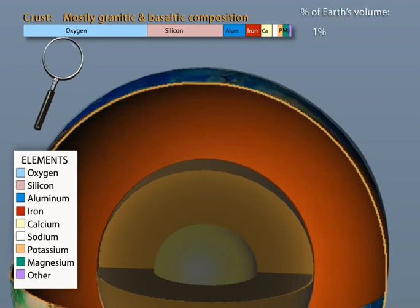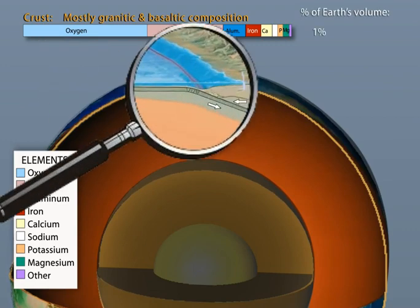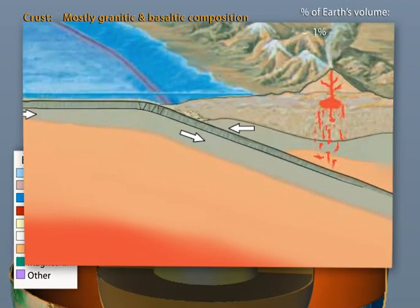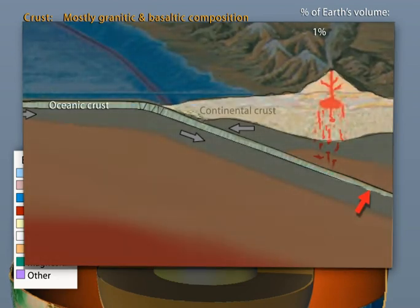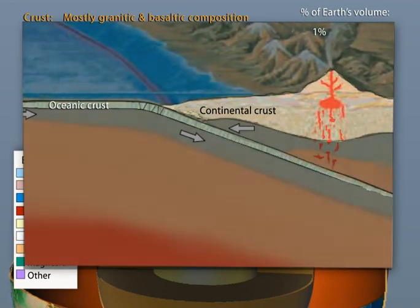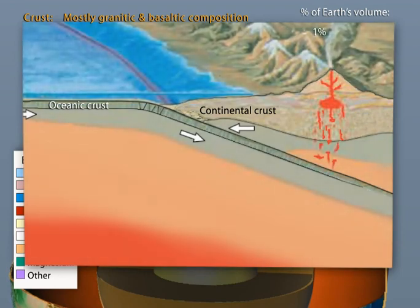At this scale, the crust is too thin to show as more than a thin line without zooming in. The crust ranges from 5 to 10 kilometers thick in the dense basaltic oceanic crust, and up to 75 kilometers in the thicker, less dense granitic rock of the continental crust. This difference in density and thickness of these two types of crust is the reason why the Earth has oceans and continents.